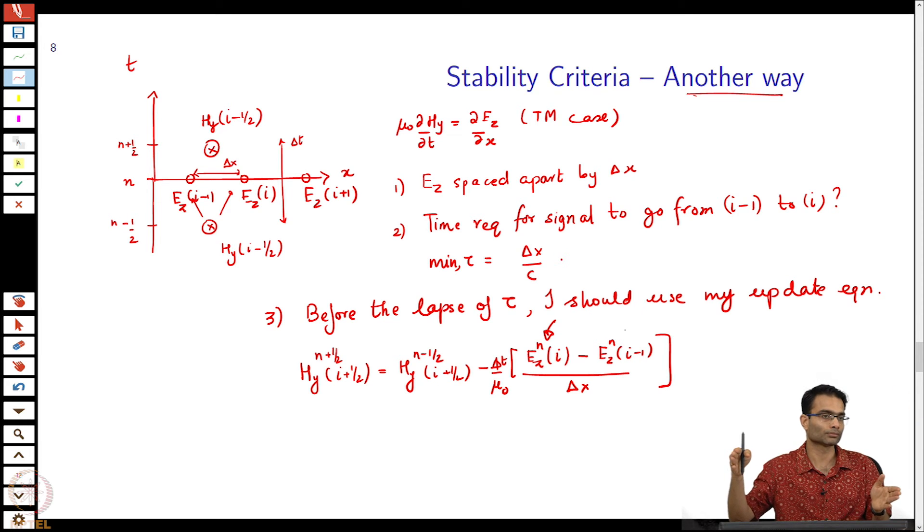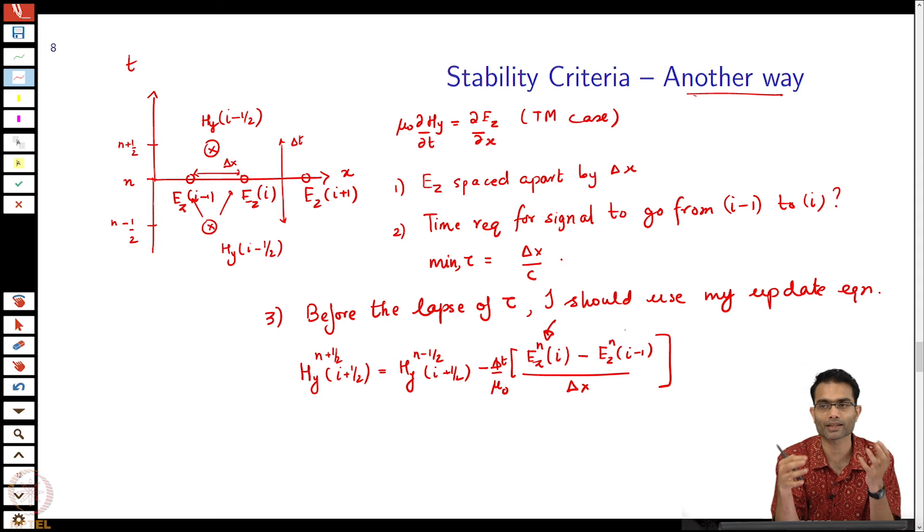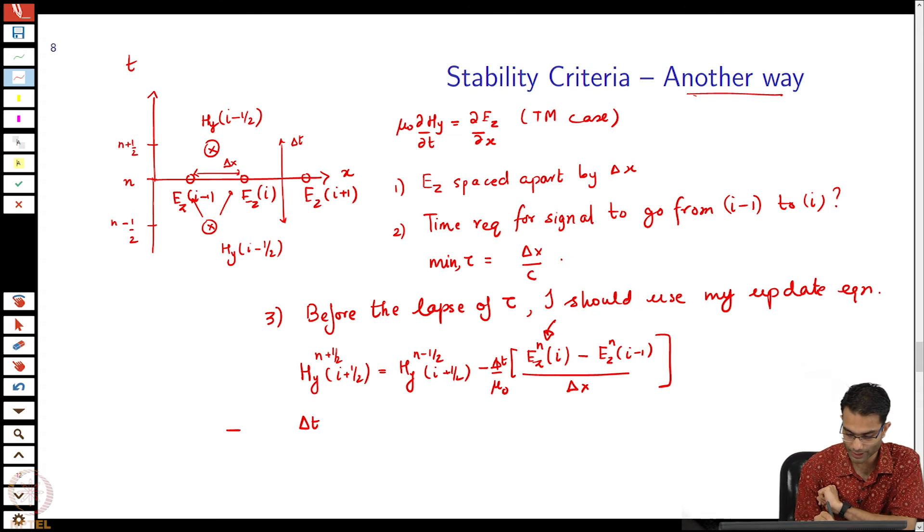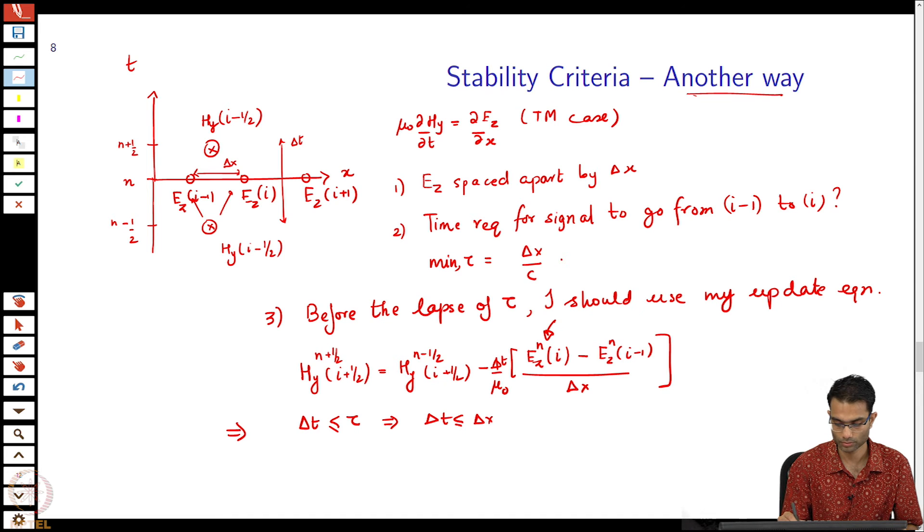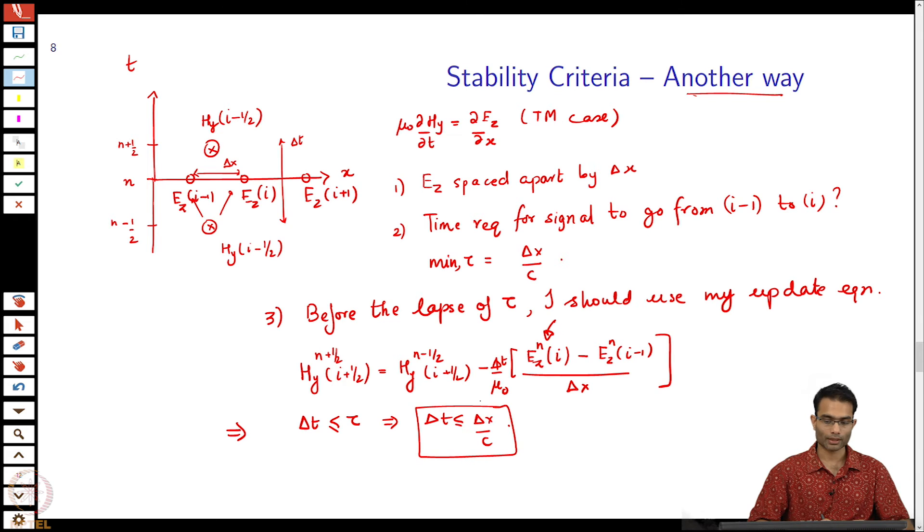If I wait for more time I will use this formula, but the numbers that I put inside will be wrong because they will refer to old information. The wave has already travelled physically. I want to do, in some sense it sounds very grand when I said, I want to do a faster than light calculation. Before the light gets there, I want to use this update equation. That basically says that the time step should be less than tau. Delta t less than delta x by c, and that is exactly what we had earlier.